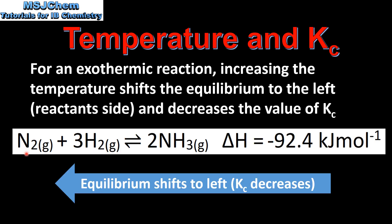Here we have the equation for the Haber process. The forward reaction is exothermic, so by increasing the temperature, the equilibrium will shift to the left and the value of Kc will decrease.